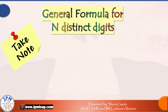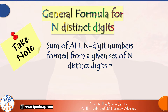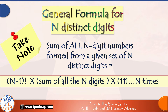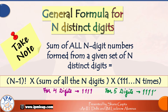Now let's devise a general formula for any set of n distinct digits. If there are n digits, there will be n! numbers possible, and any particular digit will occupy any particular position in (n−1)! numbers. So the sum of all numbers is (n−1)! × (sum of all n digits) × 111...1 (with 1 repeated n times). For 4 digits it was 1111, for 5 digits it will be 11111, and so on.